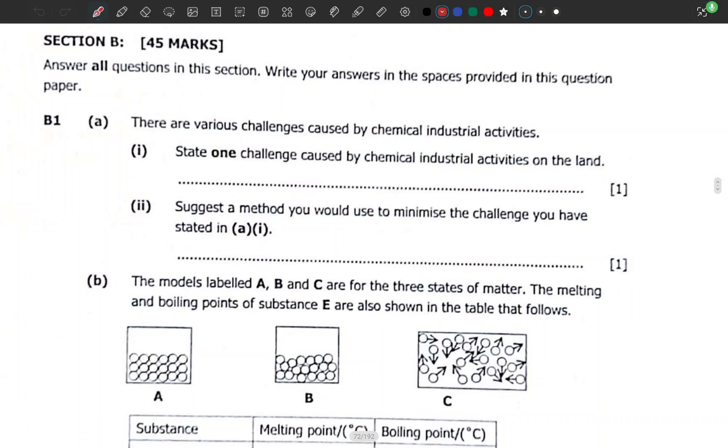Okay, so here I'm back with Section B of the Chemistry GCE 2025. The first question is B1: there are various challenges caused by chemical industrial activities.